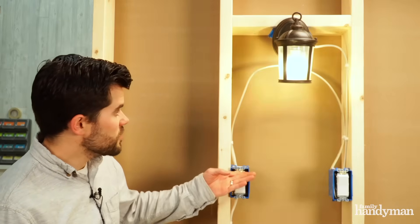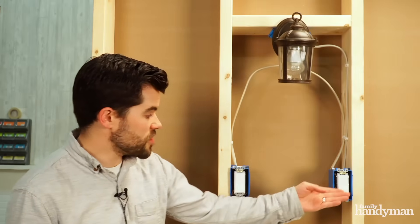Now you can flip the circuit back on and when you come to the bottom of the stairs, you can turn the light on and when you get to the top, you can turn it off.